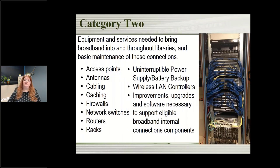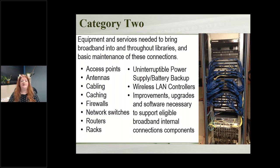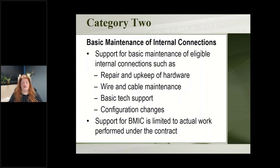Category two is everything inside your library building — any equipment or service needed to make the internet connection work. That includes cable, firewalls, routers, racks, wireless access points, power supplies, any software needed to run the network, and upgrades. All of that equipment needed to make your internet network work within your library building is eligible. In addition, basic maintenance of these connections is eligible — repairs, replacements, system updates, and security — anything to keep those connections working.